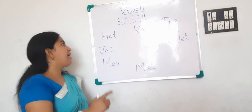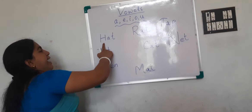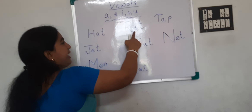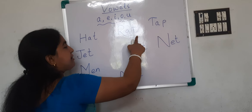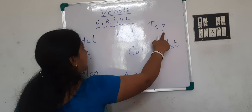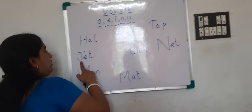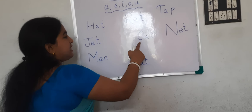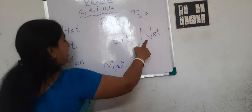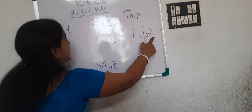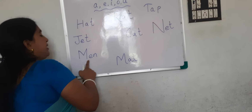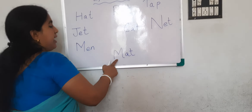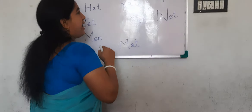Let me put these all together again. H-A-T — hat. R-A-T — rat. T-A-P — tap. J-E-T — jet. C-A-T — cat. N-E-T — net. M-E-N — men. M-A-T — mat.